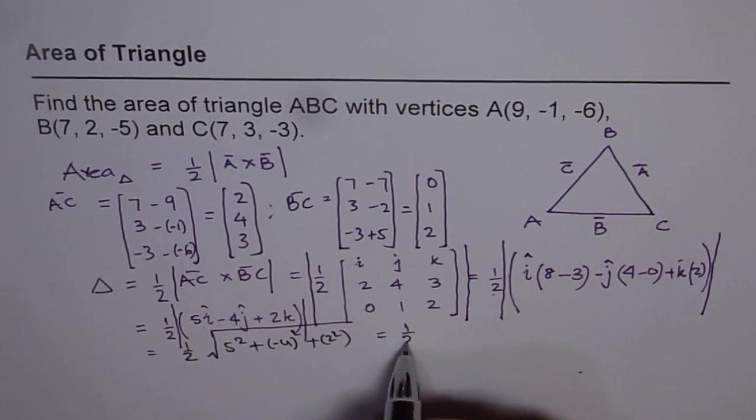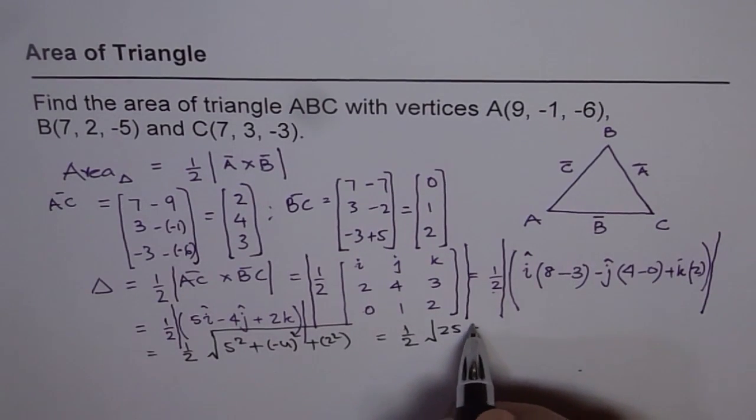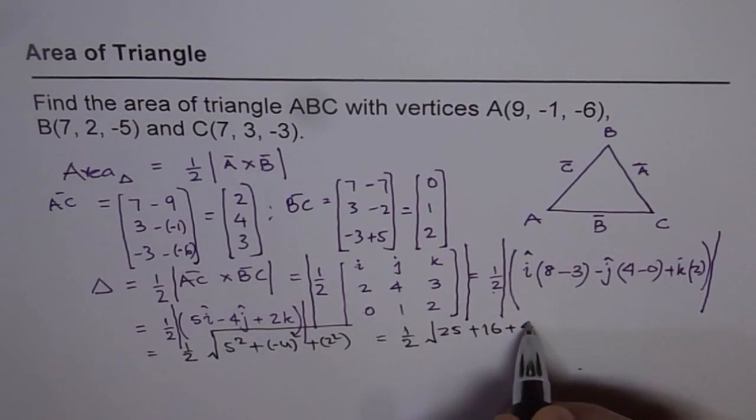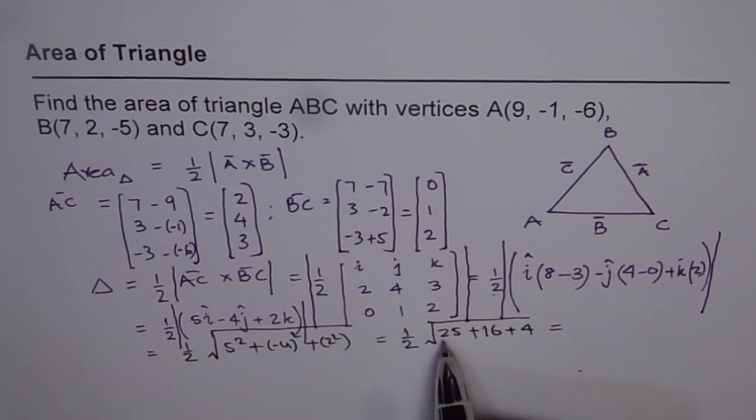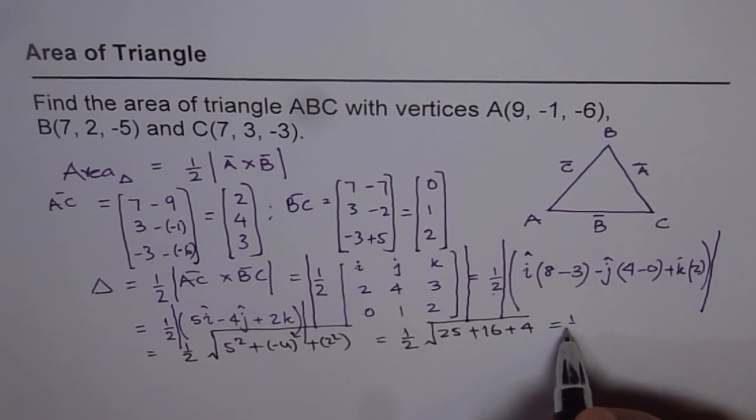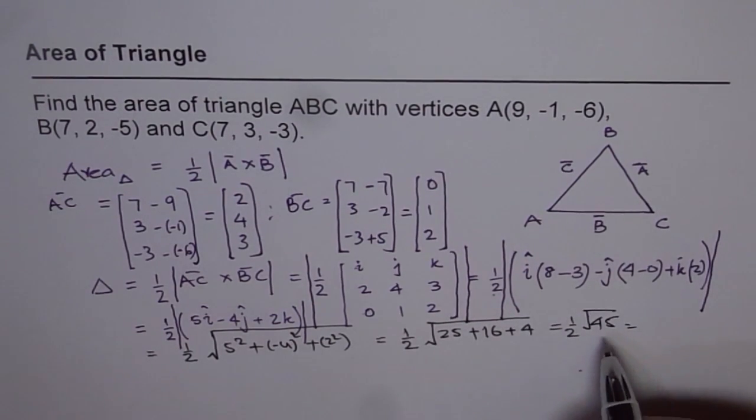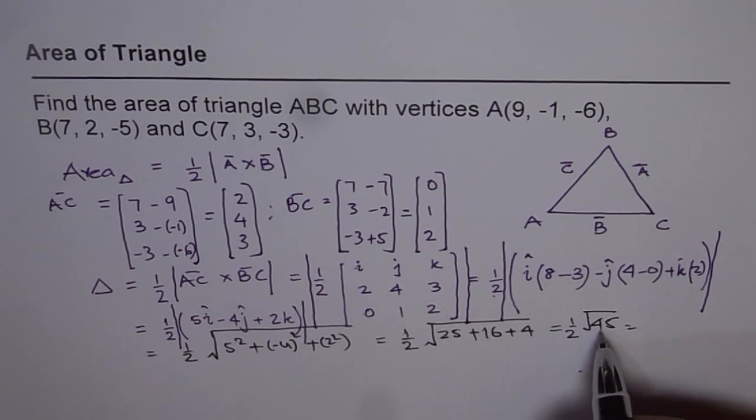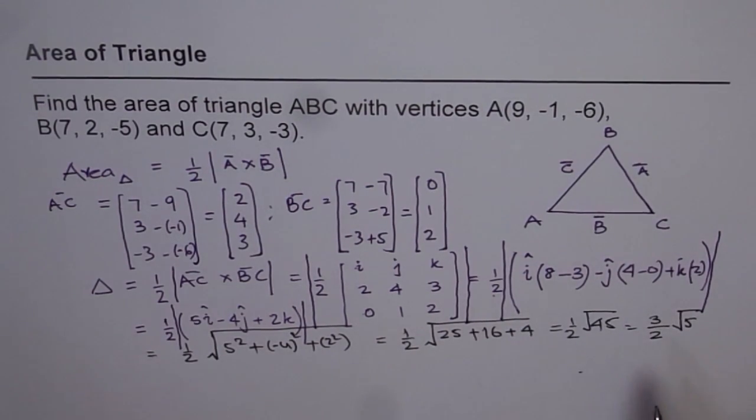which is equals to half of square root of 25 plus 16 plus 4, which is 20 and 25 is 45. So it is half of square root of 45. And you know, 45 is 9 times 5 and 9 square root is 3. So we can write this as 3 over 2 square root of 5. So that is the area of triangle.